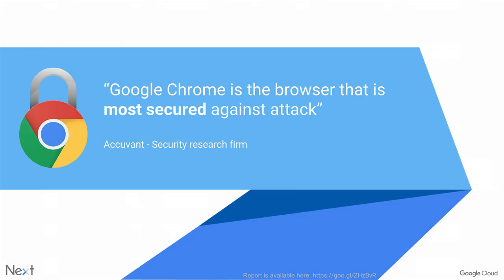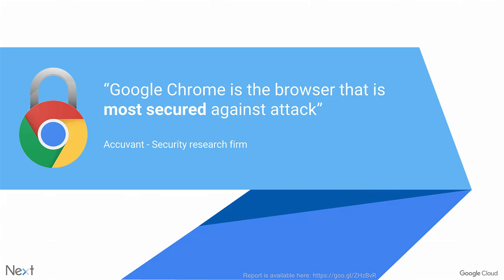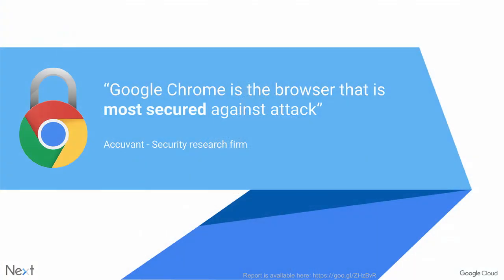Chrome takes security very seriously. Technologies like safe browsing, sandboxing, and our ability to quickly deploy updates are what makes Chrome the most secure browser available. Accuvent, now known as Optiv, wrote an extensive report comparing Chrome browser security to other browsers, going into depth on the differentiators from a Chrome security perspective. We also have updated content on our website regarding Chrome security features, and we'll be refreshing the security report in the coming months.